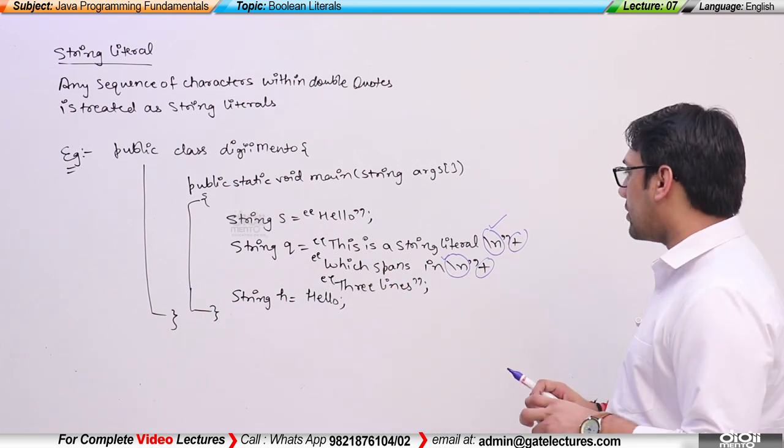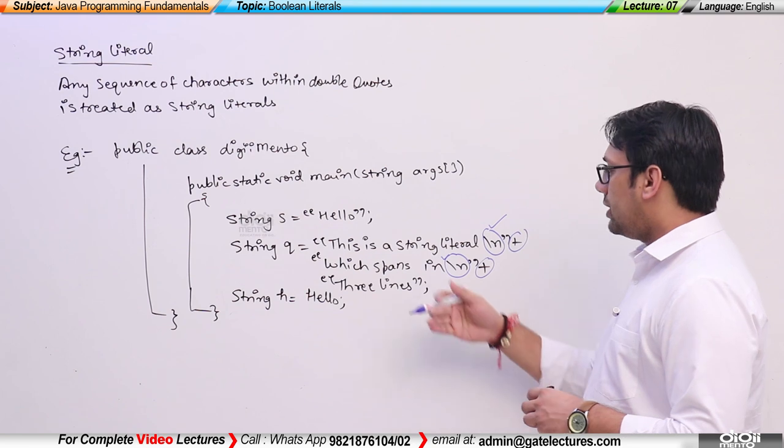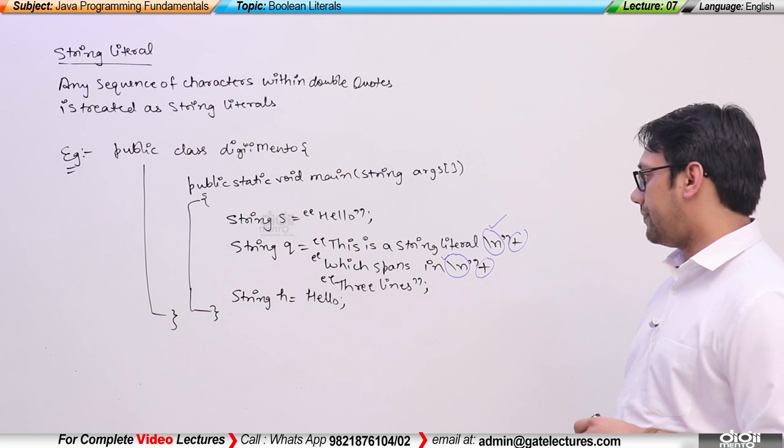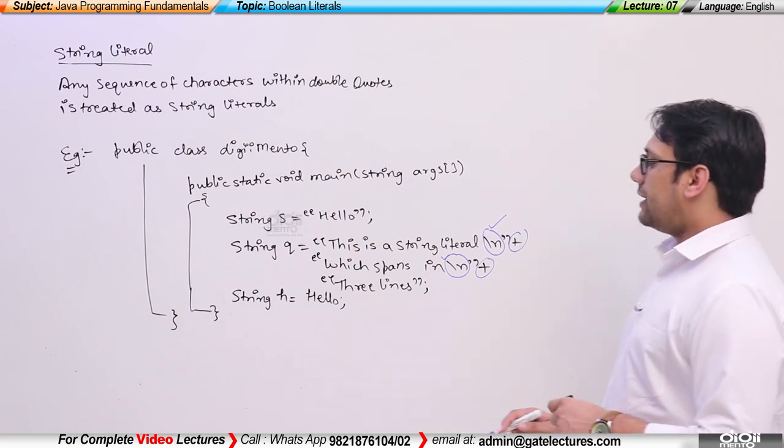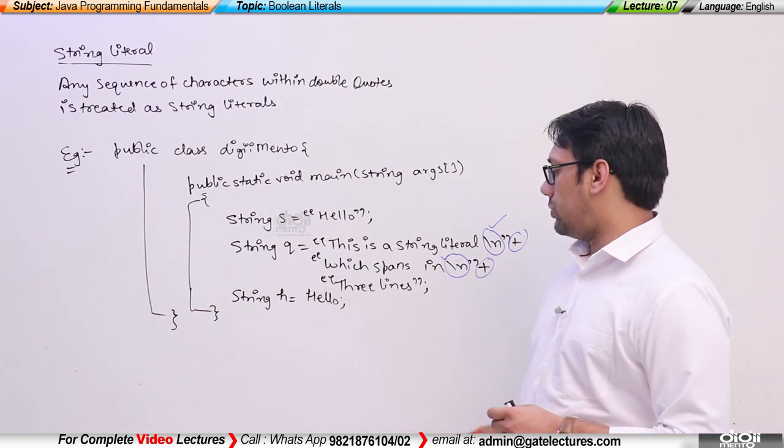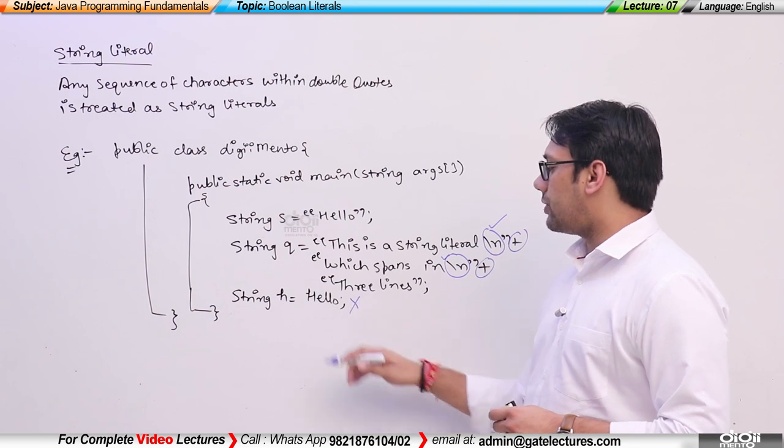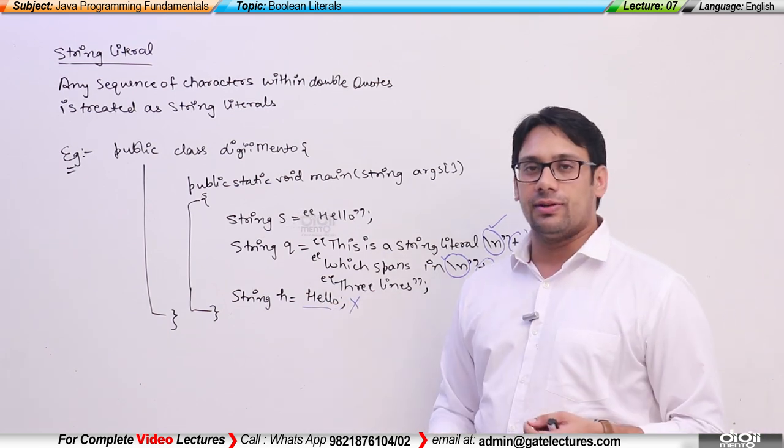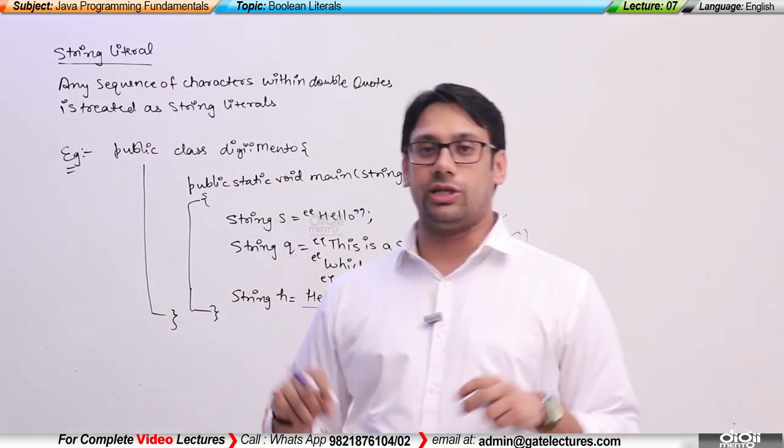it is going to print in three lines: this is a string literal in the next line, which stands in the next line, three lines. If I say string h is equal to hello, now this is going to return an error because it is going to consider this hello as a variable because it is not in the inverted commas.